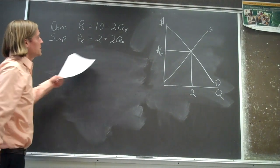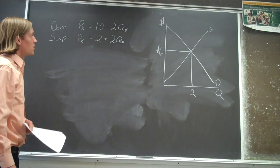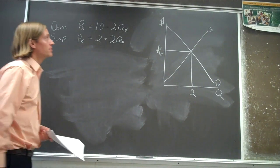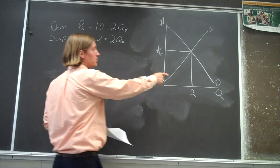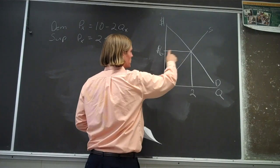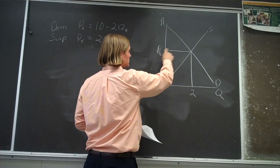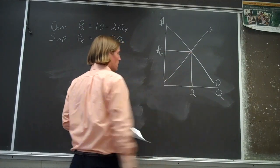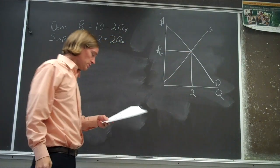We're given a demand equation and a supply equation. We can graph the supply and demand equations and get an equilibrium price of six dollars and an equilibrium quantity of two units.